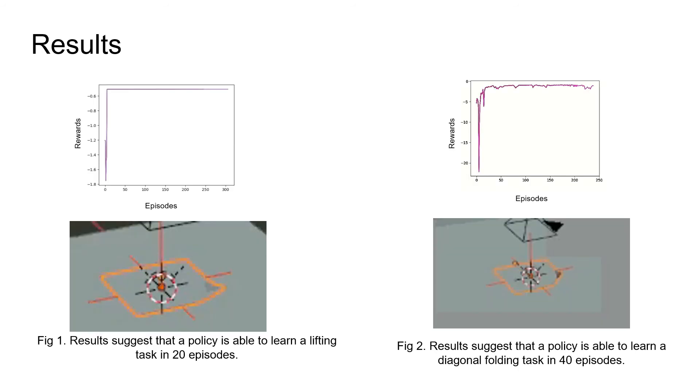We tested our algorithm on two tasks. The first is a lifting task where a manipulator needs to lift a cloth to a goal location. We were able to solve this task within 20 episodes. The second task is a diagonal folding task where a manipulator needs to fold a cloth diagonally. This task was solved in 40 episodes.